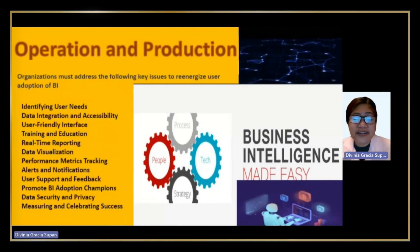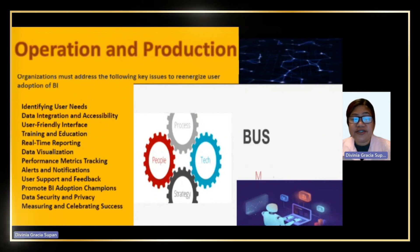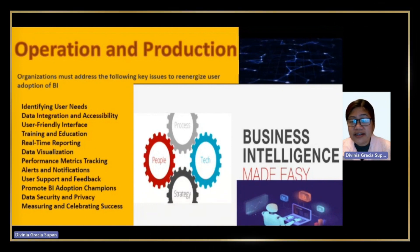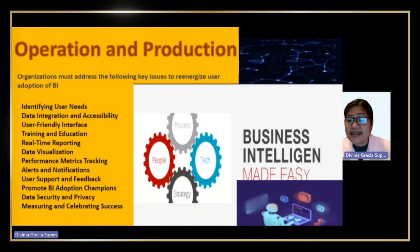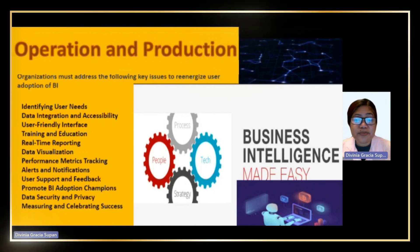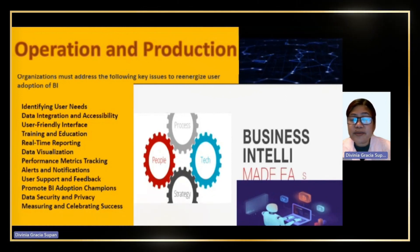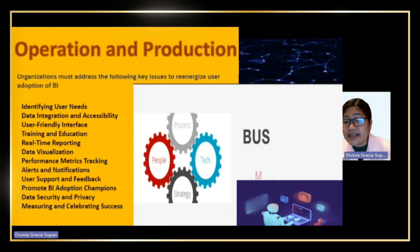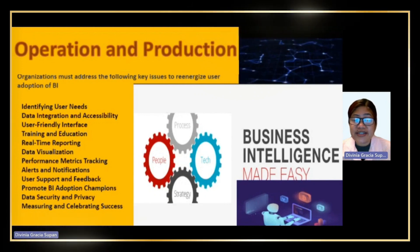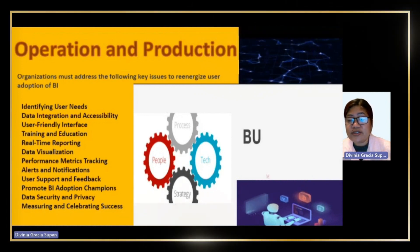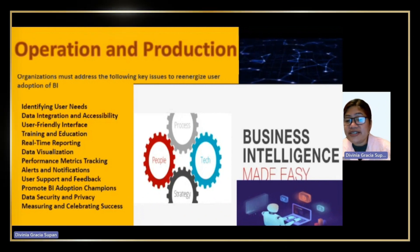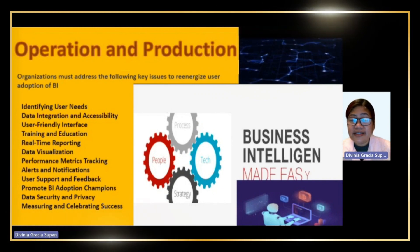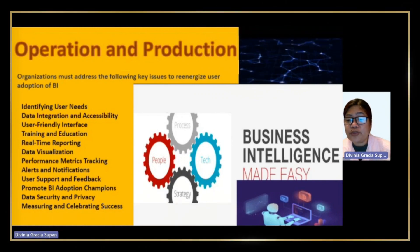Regarding operations and production, by focusing on these aspects and incorporating a user-centric approach, Caterpillar tunneling can revitalize user adoption of BI in operations management and production. As more users embrace the BI platform and leverage its capabilities, the company can expect improved operational efficiency, enhanced decision-making, and increased overall productivity. These strategies address issues related to user interfaces, relevant insights, data quality, executive buy-in, and performance measurement, all of which are required to revive user adoption of business intelligence.